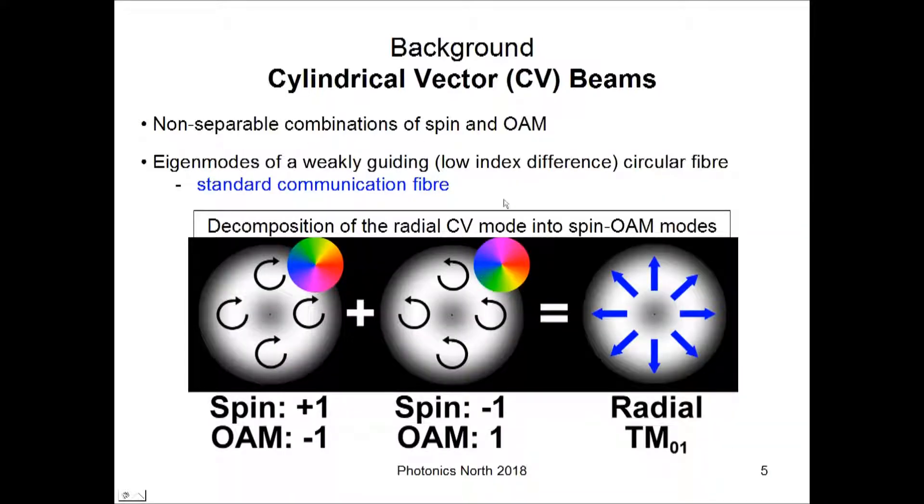As an example of how the radial mode is composed from spin and OAM. Here is a beam with spin of plus one indicated by the polarization arrows here. This one has spin of minus one or polarization of left and right circular polarization. And the OAM represented by the phase diagram in the corner of these modes.